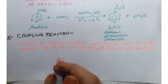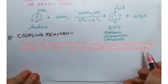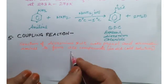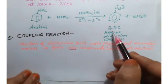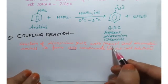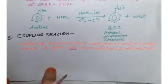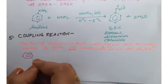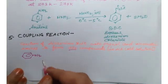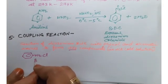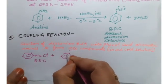Next is coupling reaction — very important. Coupling reaction is the reaction of diazonium salts with phenol or aromatic amines in ice-cold solution. Benzene diazonium chloride (BDC), written as ring-N2+Cl−, reacts with phenol in ice-cold solution at 273 to 278 Kelvin.